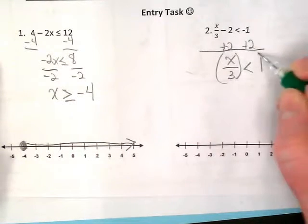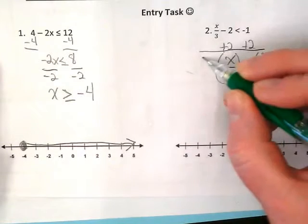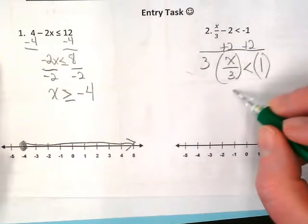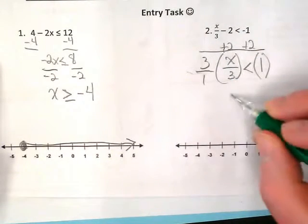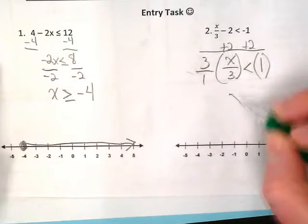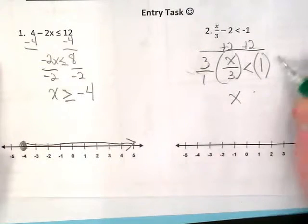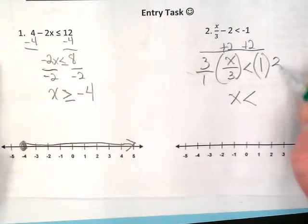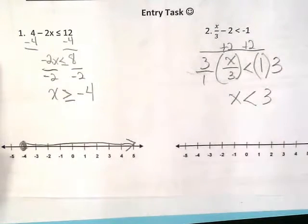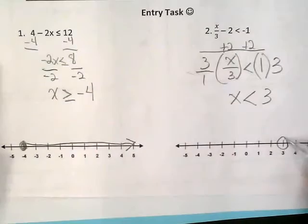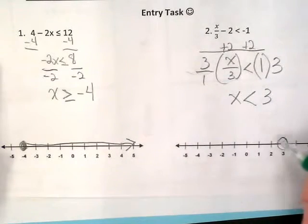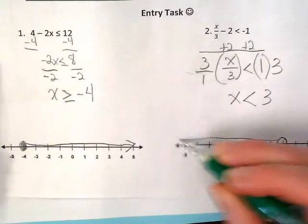Multiply this by the opposite because we want to get that x with just its invisible 1. We end up with x is less than 3. Circle it, we're going to leave the circle open because it's just a less than sign, and it goes to the left.